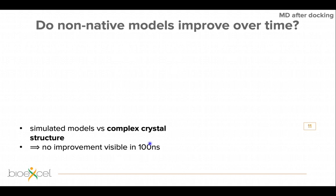From this analysis we fed these properties into a machine learning classifier. The first question was: can non-native models improve over time? Maybe they are not good after docking, but if we simulate them for 100 nanoseconds they would come closer to the reference. In this step we compared the course of the simulation to the original crystal structure — the reference you would wish to achieve.